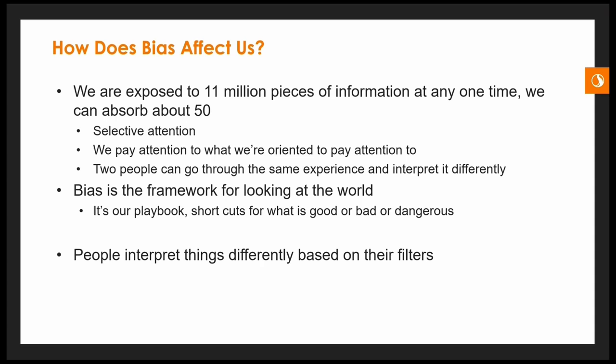Bias is the framework for looking at the world — it's our playbook, shortcuts for what's good, bad, or dangerous. We have to understand that people interpret things differently based on their filters. Ross used this as an example back in 2016, well before 2020, and even now this particular phrase started a lot of unrest. I want to walk you through the same way Ross did and show you how different people can interpret one thing in multiple different ways.